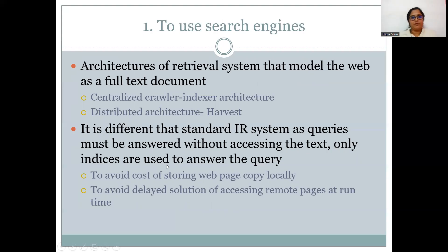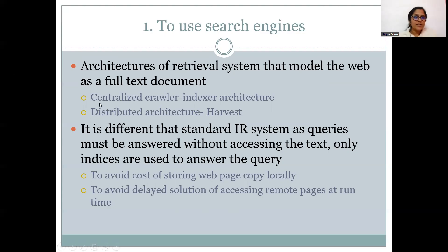Today we will be discussing the first strategy, which makes use of a search engine for web searching. The architecture of an information retrieval system that models web contents as text documents can be categorized in two ways. It may use a centralized architecture which makes use of a crawler-indexer architecture, where the functioning of crawler and indexer is centralized. If it uses a distributed strategy for gathering and indexing data, then it is termed distributed architecture — here we will use the Harvest architecture while discussing distributed architecture.